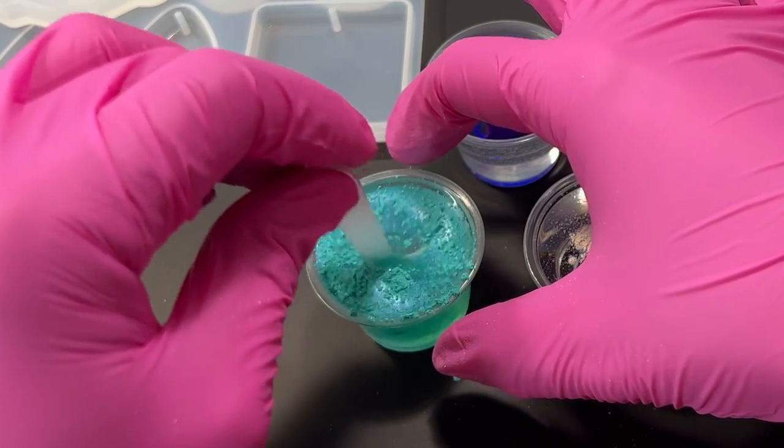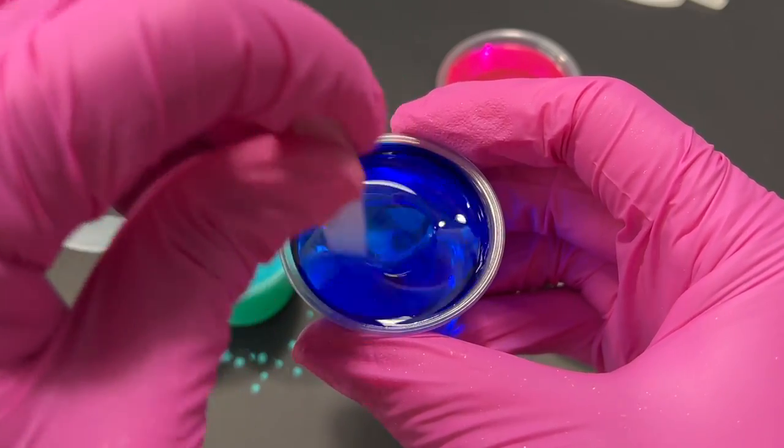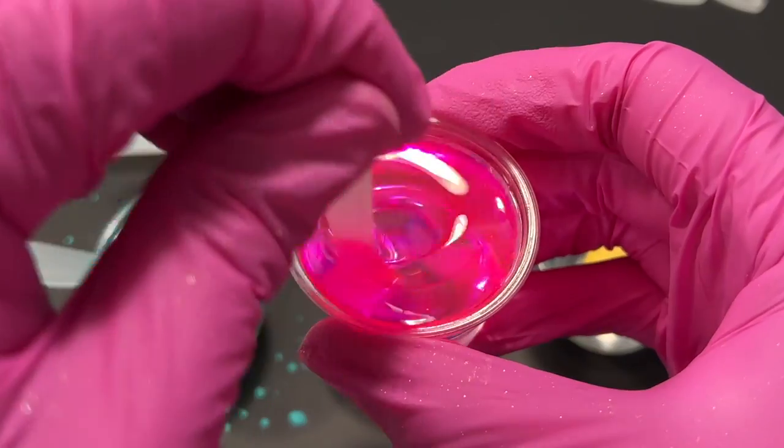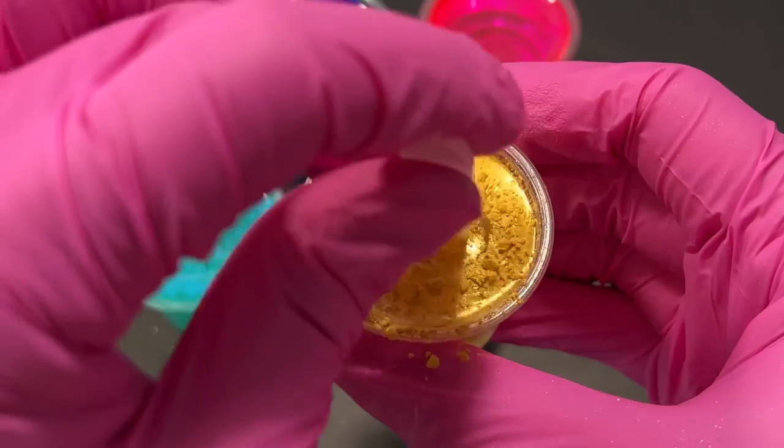One pro tip while using mica powders in resin is to dissolve the mica powders first in a little bit of 91% or higher rubbing alcohol. Mica powders can clump up while you're mixing them in the resin, and I found that dissolving them in the alcohol first fixes that problem.